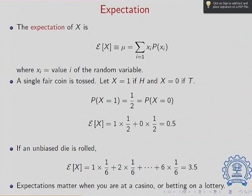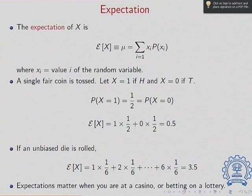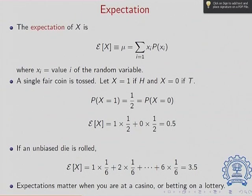The same thing applies if you roll an unbiased die. You expect to see values 1, 2, 3, 4, 5, 6 with equal probability — each with probability 1/6. Using the formula summation xi P(xi), the expected value of x turns out to be 3.5. And once again, 3.5 is not an outcome you will see when you roll a die once.